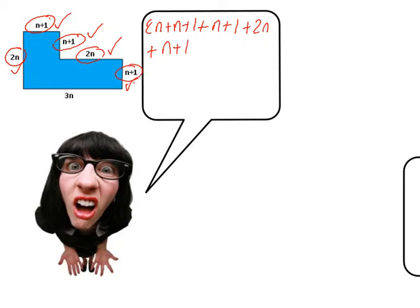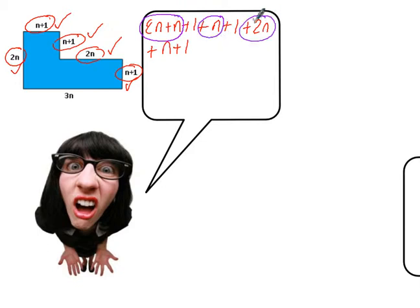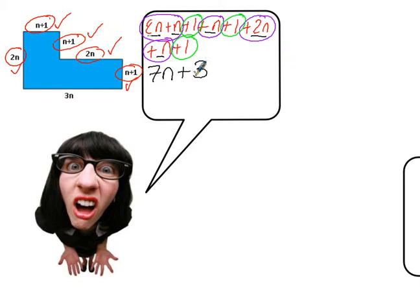And now I'm going to group the terms like you tell me to. So I've got 2n and n, got an n here, 2n here, I've got an n here. Is it all together? I've got 2, 3, 4, 5, 6, 7 n's. And I've got plus 1, plus 1, plus 1, plus 1. So that gives me plus 3. And that gives me an expression for the shape, definitely.